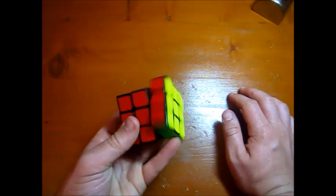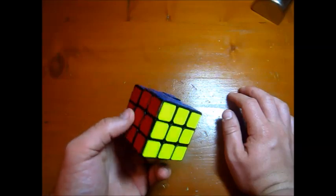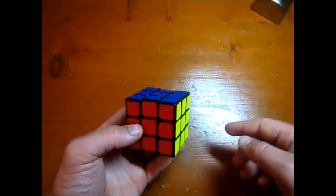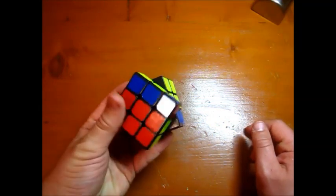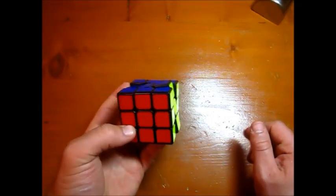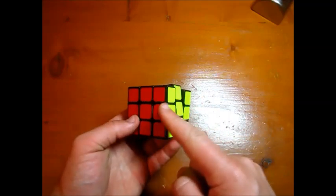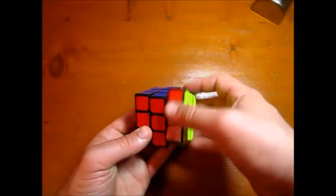But if you don't understand that, that's okay. The most important thing to understand for this video is that doing a sledgehammer, R prime F, R, F prime changes the orientation of this edge and this edge with respect to the R layer.